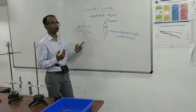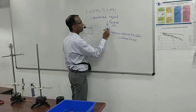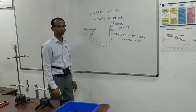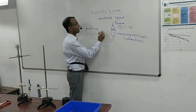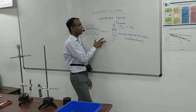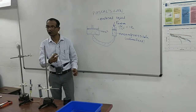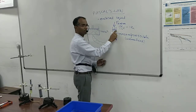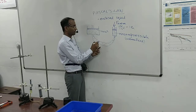Now, how is this useful for doing work? If I apply 1 Newton on an area of 1 meter squared, the pressure is 1 Pascal. What Pascal's Law says is: if there is an enclosed liquid and I apply some extra pressure at any part of it, that extra pressure will be transferred undiminished to every part of that liquid. So if I apply an extra pressure of 1 Pascal here, that 1 Pascal will be added to the existing pressure at every point in the liquid.